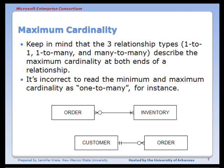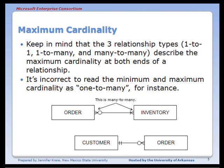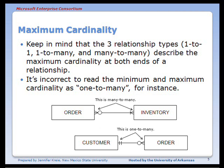Keep in mind that the three relationship types describe maximum cardinality only. It's incorrect to read both the minimum and maximum cardinality together. For example, you would not describe a relationship as one-to-many if it's actually many-to-many, and you would not call something one-to-one if it's actually a one-to-many relationship.